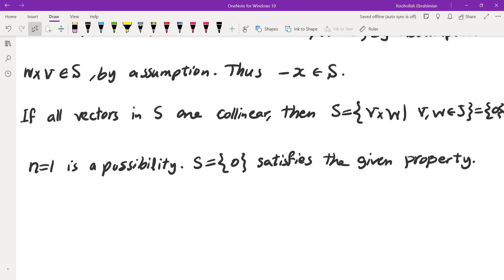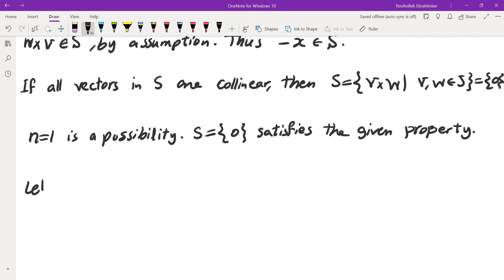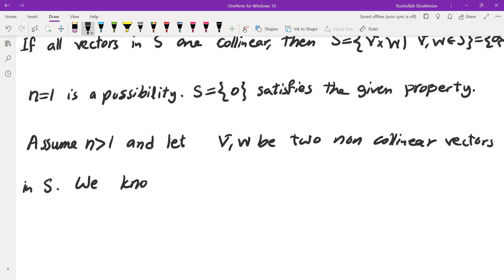Next, let's take vectors that are not collinear and take the cross product and see what we get. So let's assume that N is more than one, and let V and W be two non-collinear vectors in S. We know that if you take the cross product, V cross W, that would be in S.